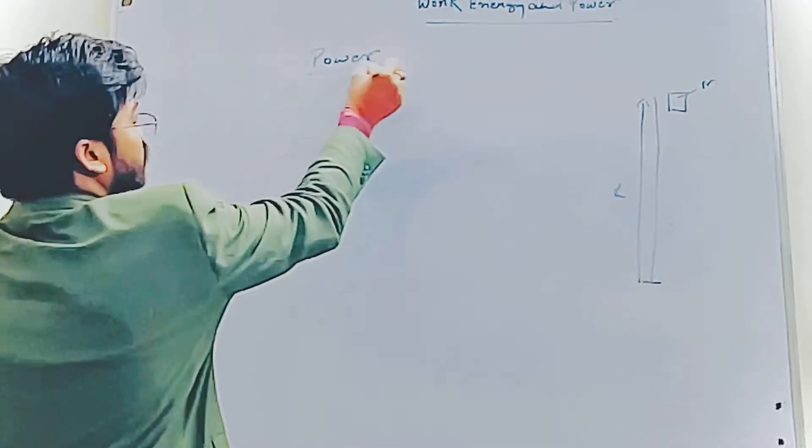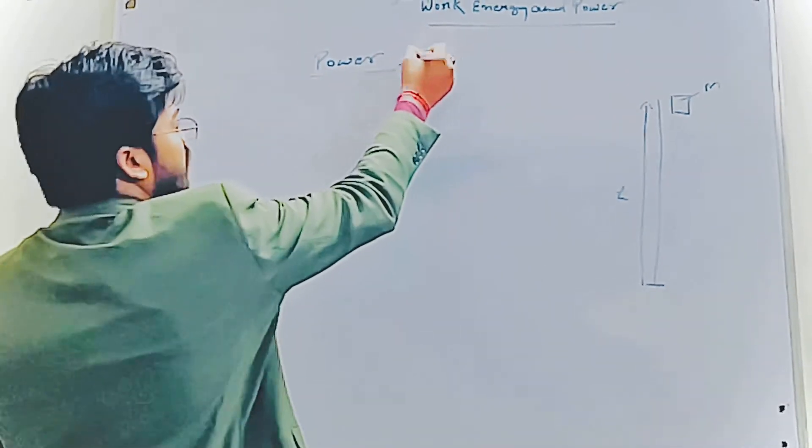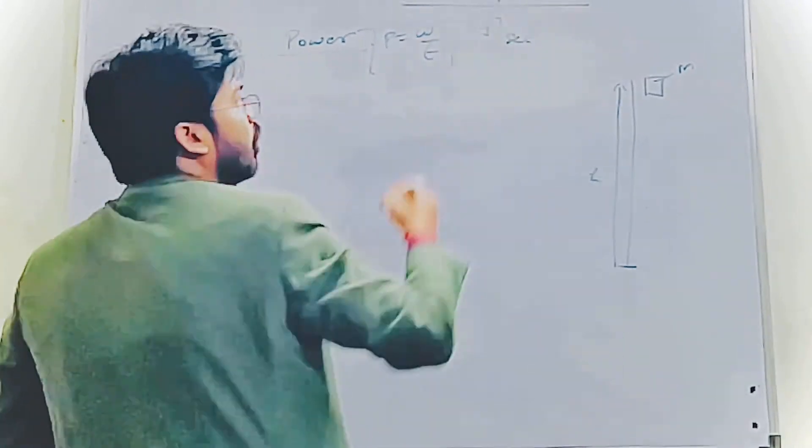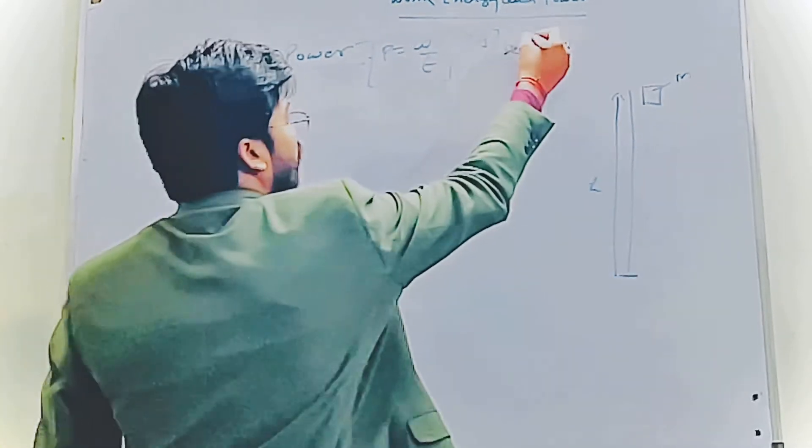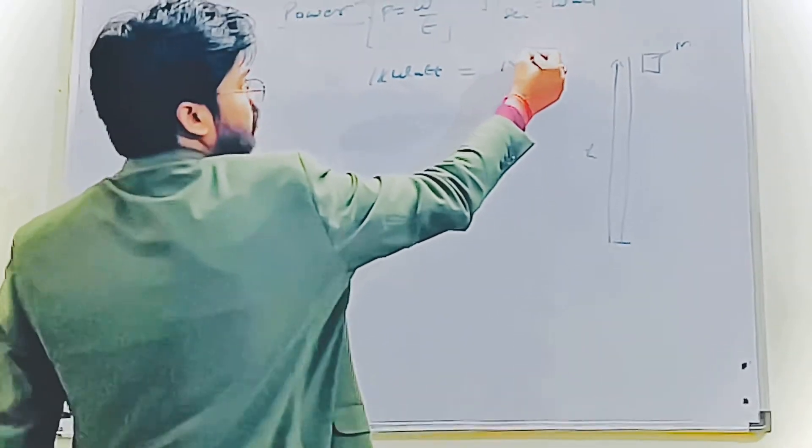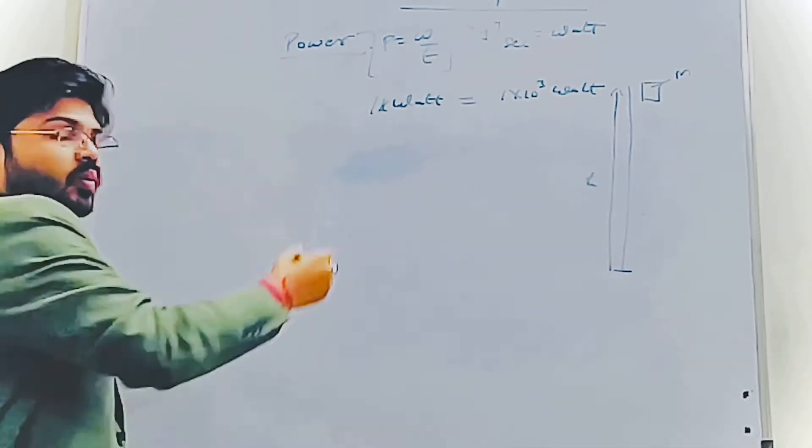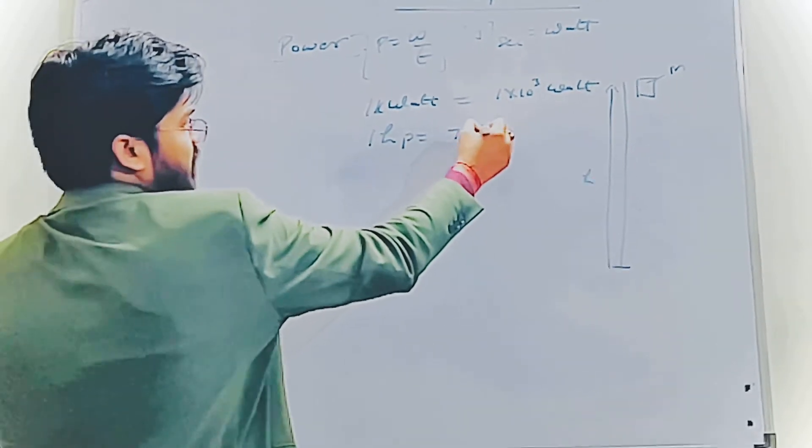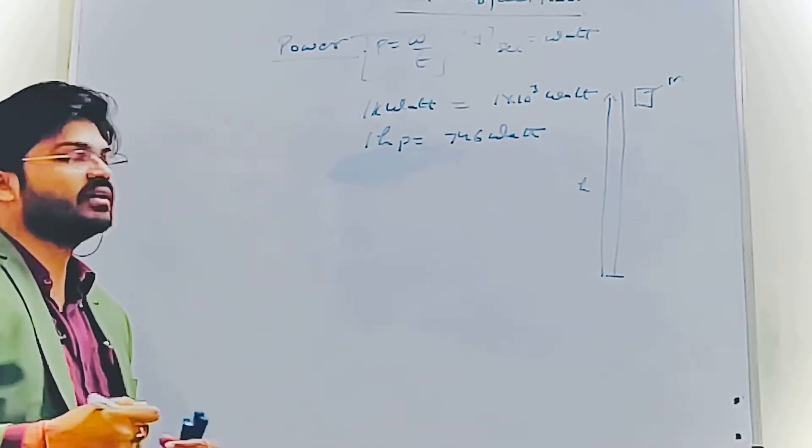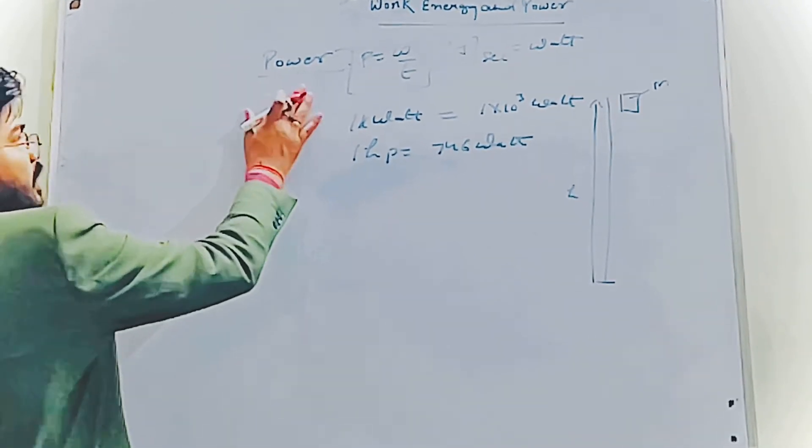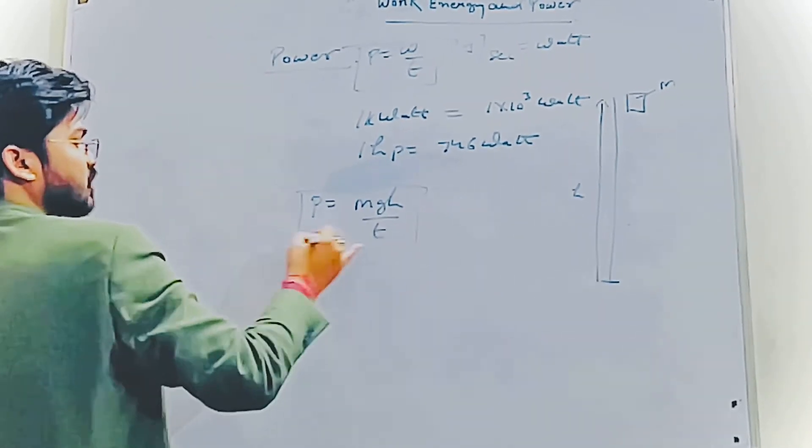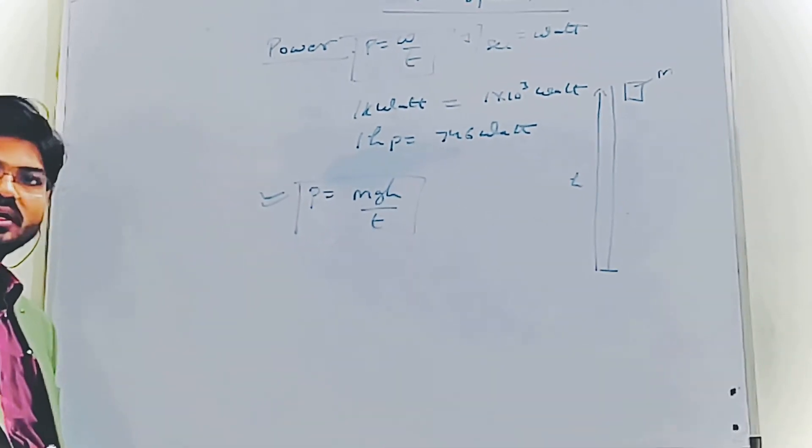Next topic is power. The rate of doing work is power. P equals W upon t. Its units are joules per second or watts. 1 kilowatt equals 1 times 10 to the power 3 watts. Also, 1 horsepower equals 746 watts. Since P equals W upon t and W equals mgh, we get P equals mgh upon t. This is also a formula we use for power.